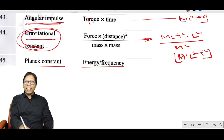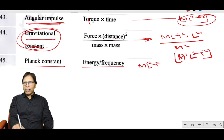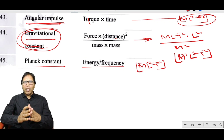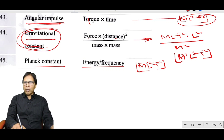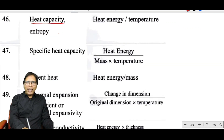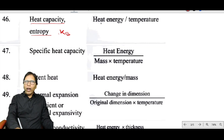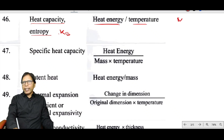Planck's constant has the same dimension as angular impulse: ML²T⁻¹. Heat capacity, entropy, and Boltzmann constant all have the relation heat energy divided by temperature: ML²T⁻² divided by K, giving ML²T⁻²K⁻¹.